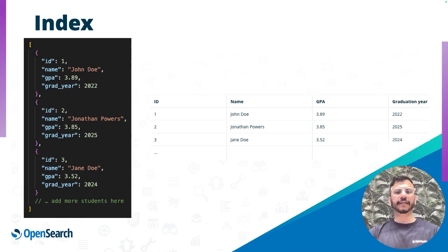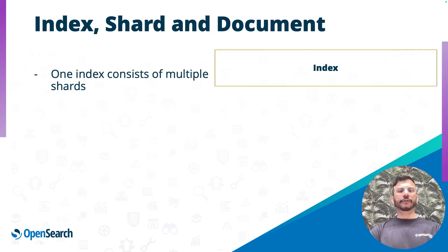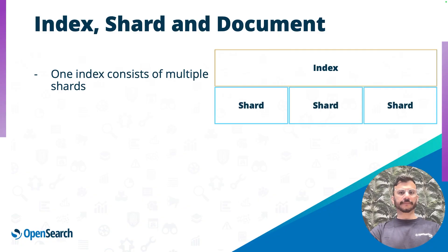In this example, I have three documents. But what if you have 30 billion documents? You can still index 30 billion, 300 billion, or even more documents. But it has to be partitioned in some way given the scale. You can partition an OpenSearch index into multiple shards.